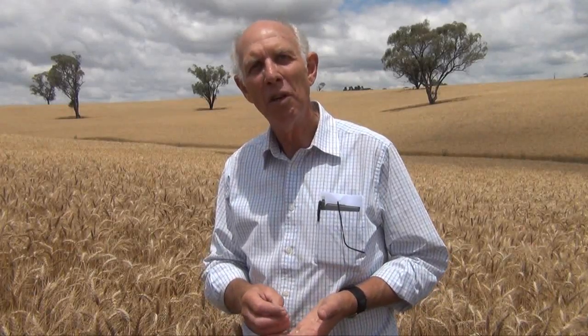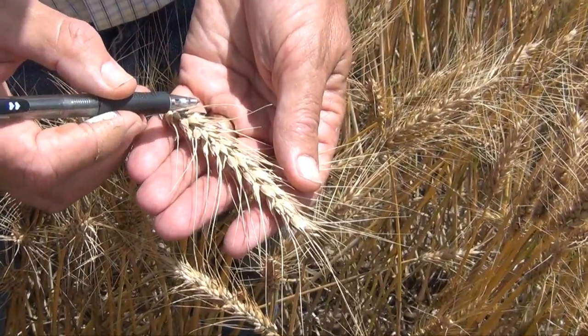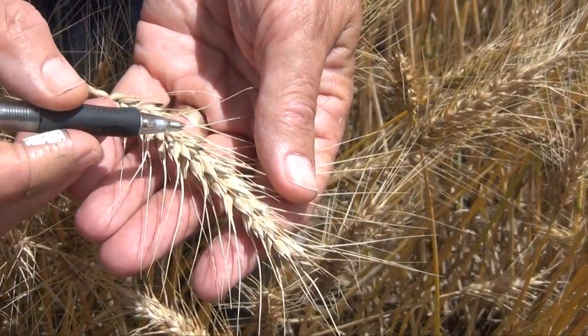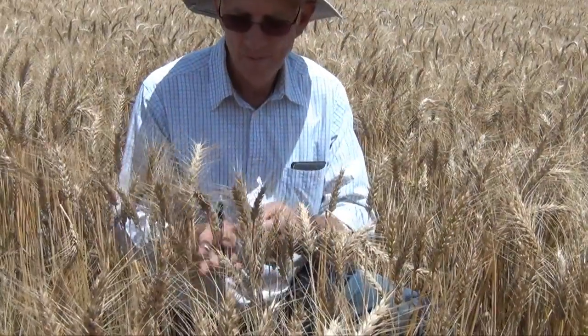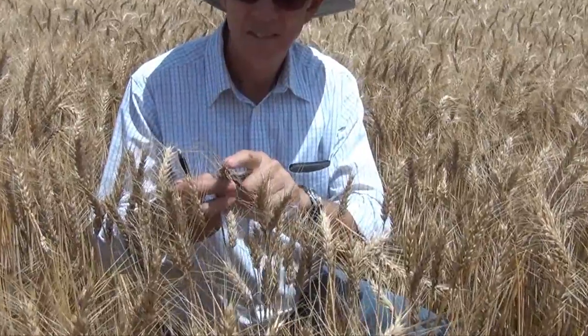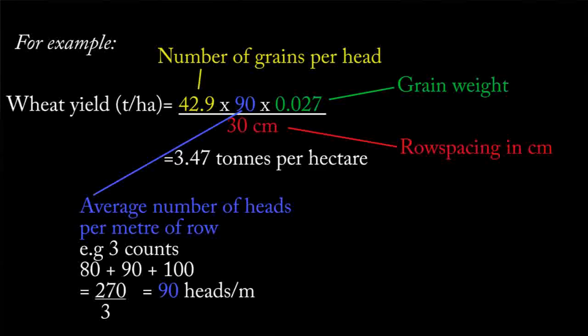I only count one side of the head. Over the years I've done a lot of counting on both sides and I find that one side is basically 50% of the grains, so I just double it. The formula is: number of grains per head multiplied by the number of heads, multiplied by a factor of 0.027 to 0.029 — to account for grain size and thousand grain weight — divided by the row spacing in centimetres. So if it's a 25 centimetre row spacing, you'd divide by 25. I try to do three of those counts on average areas in the crop, plus an assessment of thicker or thinner areas and the percentage of those.